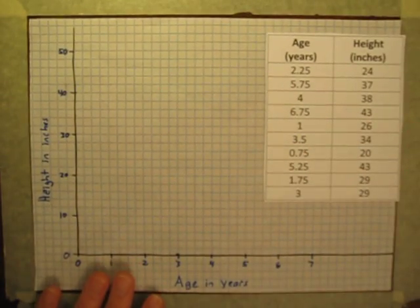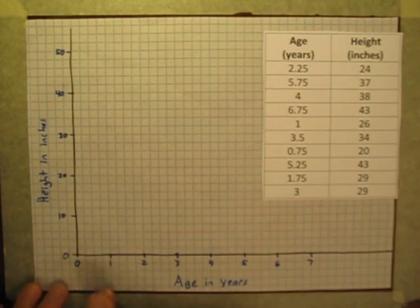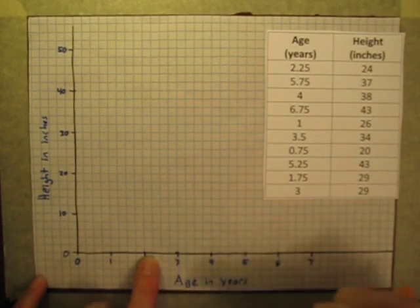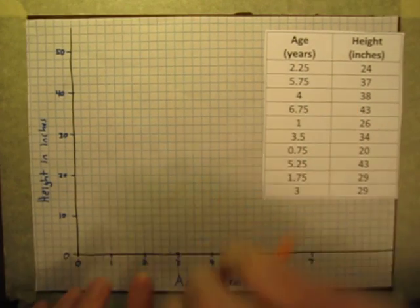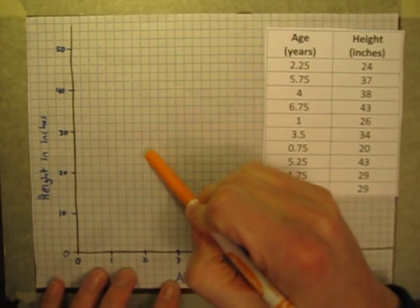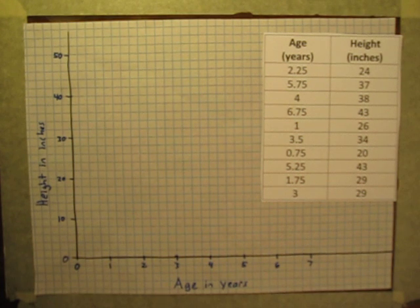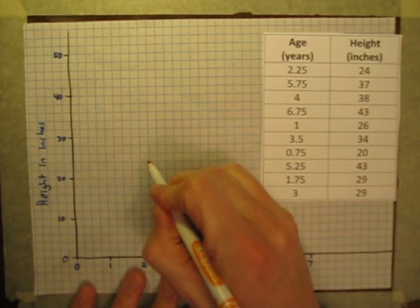So here's age in years. Here on the y-axis is the height in inches. And we can start with just this first child, 2.25 years old, 24 inches tall. If I go over to 2.25 years old, I can go here on the x-axis, I can slide up the graph until I get to 24 on the y-axis, and right about there is where I would have a point. So this would be the point for the first child right there.